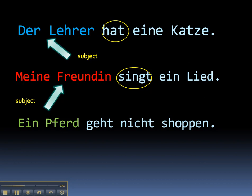Our third example: Ein Pferd geht nicht shoppen — a horse does not go shopping. What a shame. So what's our action here? Geht is our conjugated verb. So who or what is doing the action of this verb? Clearly ein Pferd. So the horse is the subject and therefore in the nominative case.